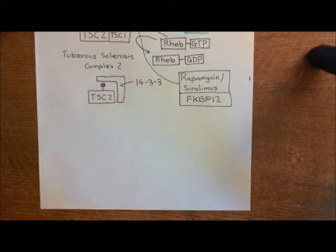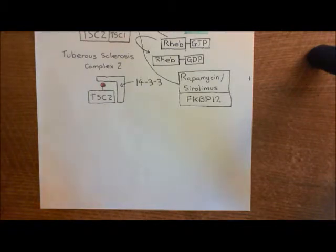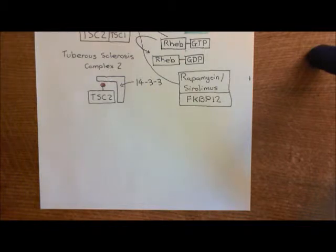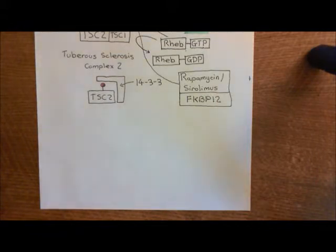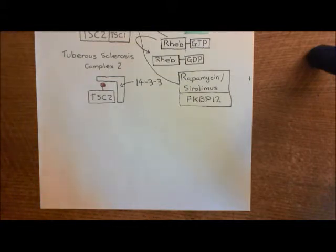It's not understood very well as to whether a single adaptive immune response that you've initiated will continue going on for this chronic period, or whether what will happen is you'll launch an adaptive immune response, that one will quieten down, and then you'll launch another one, and then that one will quieten down, and you're continually launching new ones. Which of those two it is isn't very well understood.